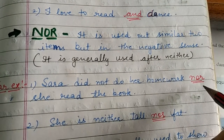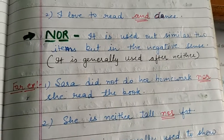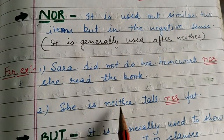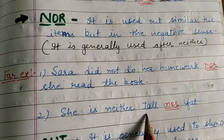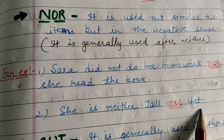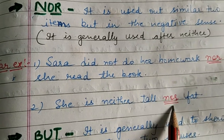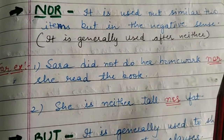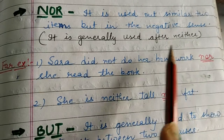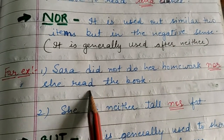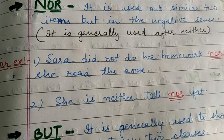When we use 'nor', we are using it in a negative sense. And how do we use it with 'neither'? 'She is neither tall nor fat.' Nahi wo tall hai, nahi wo moti hai. So with 'neither' also we use 'nor'. Even when used alone, 'nor' connects two similar items in a negative sense — do similar items ko connect karne ke liye lekin in a negative sense.